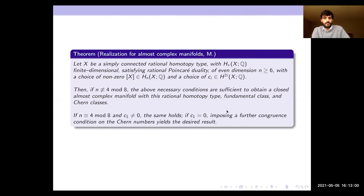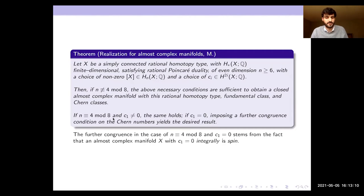I initially thought this was a bug in my proof, but I think there's something interesting going on. Basically, if you have a closed almost complex manifold with first Chern class zero integrally, then it's spin, and in these dimensions — four mod eight — that implies some additional congruences on the Chern numbers.